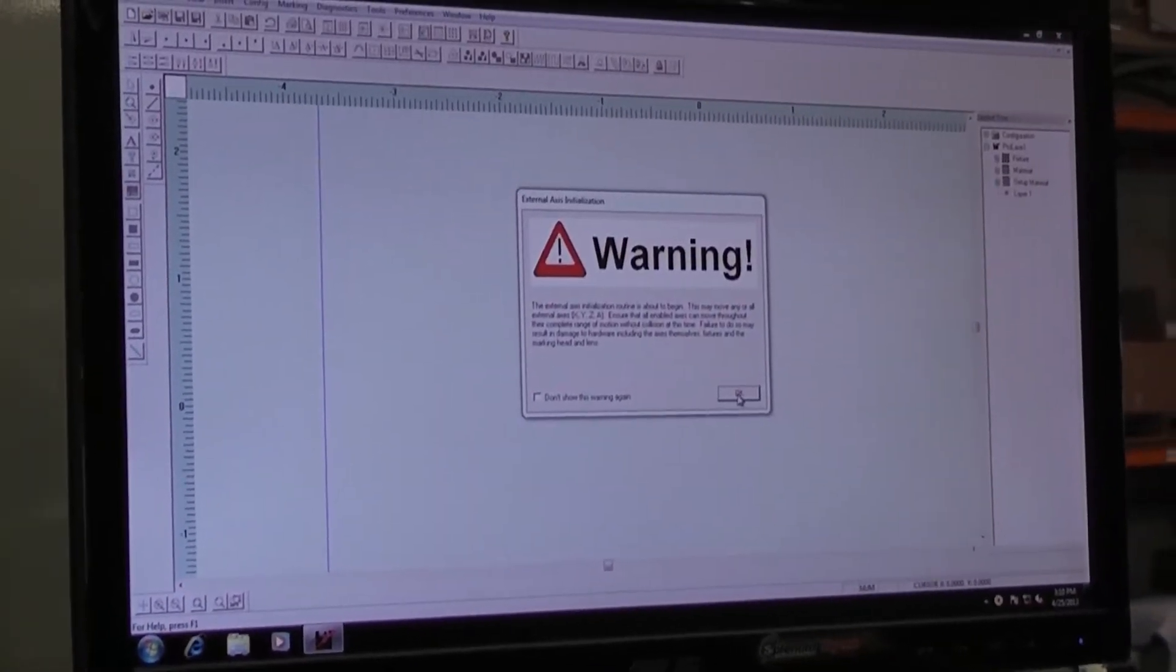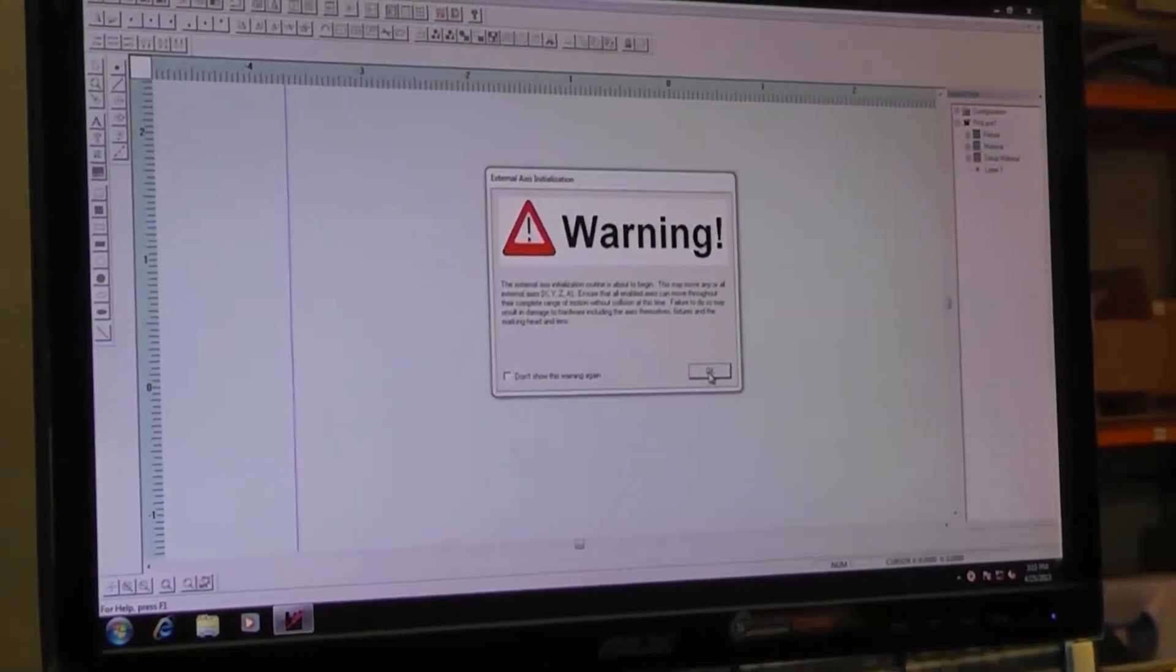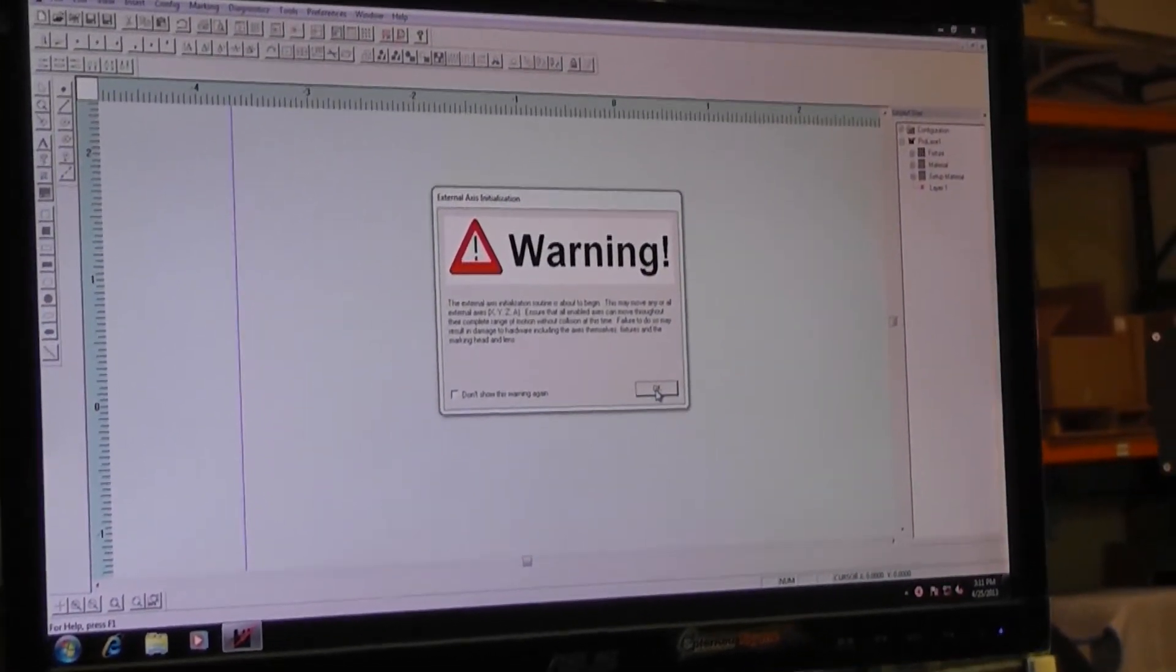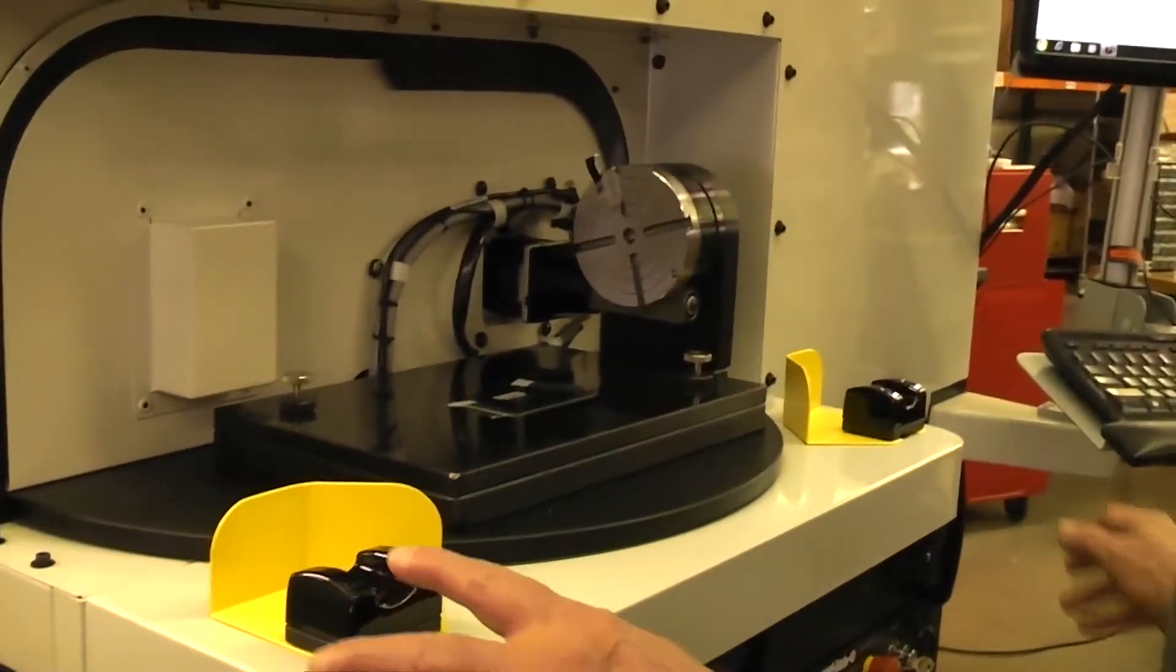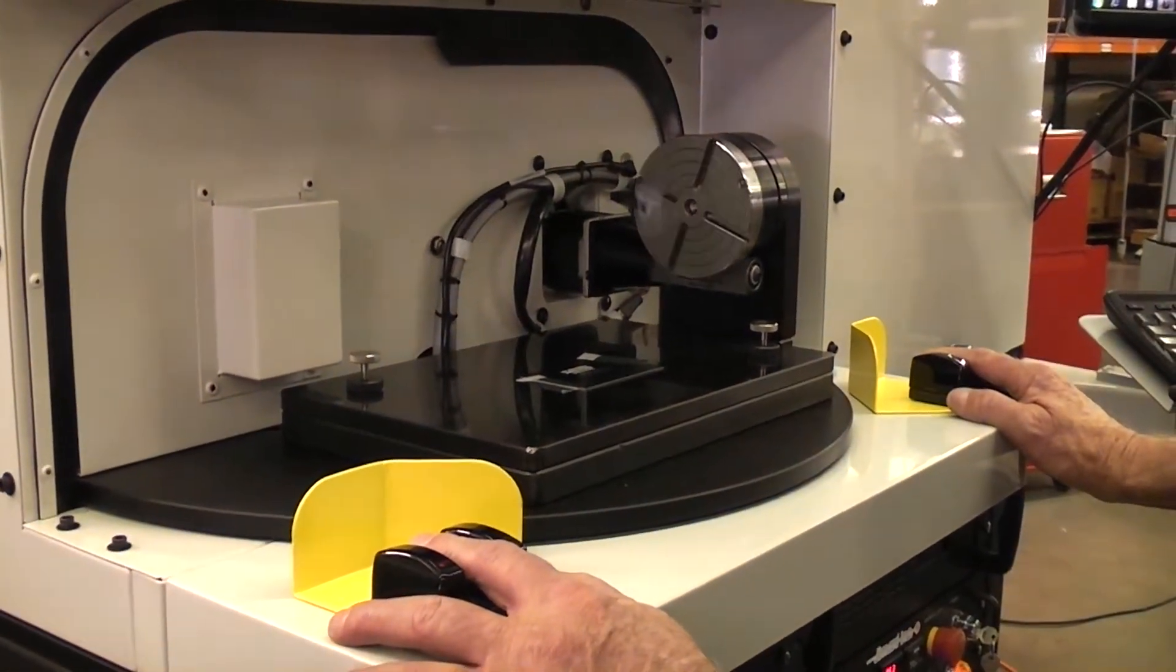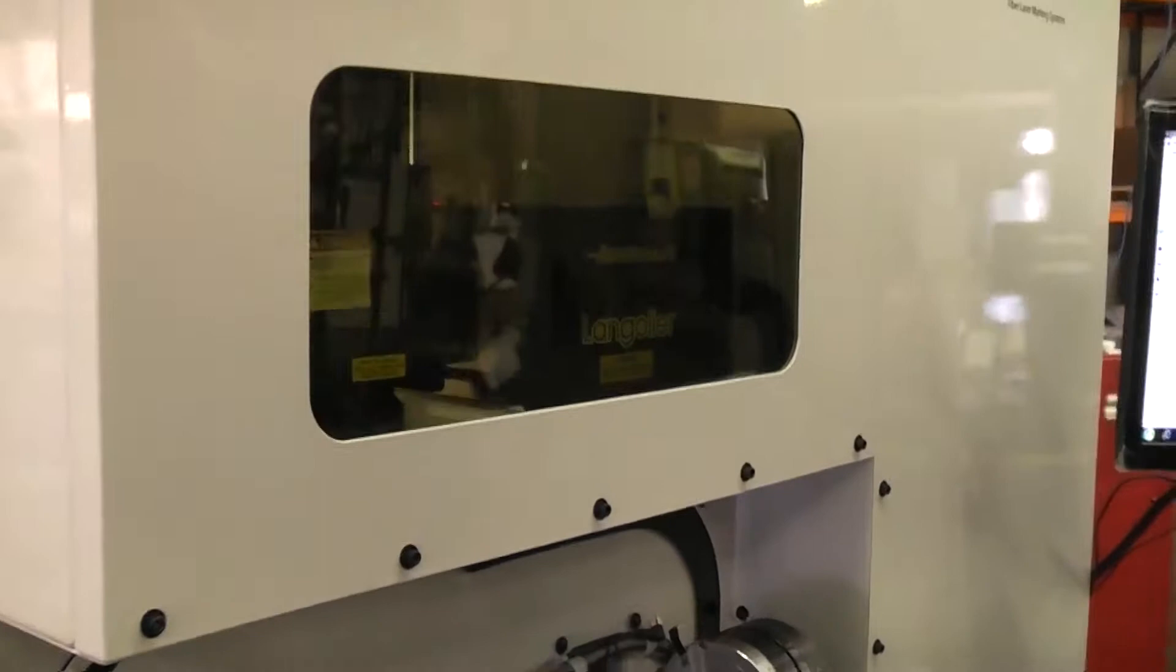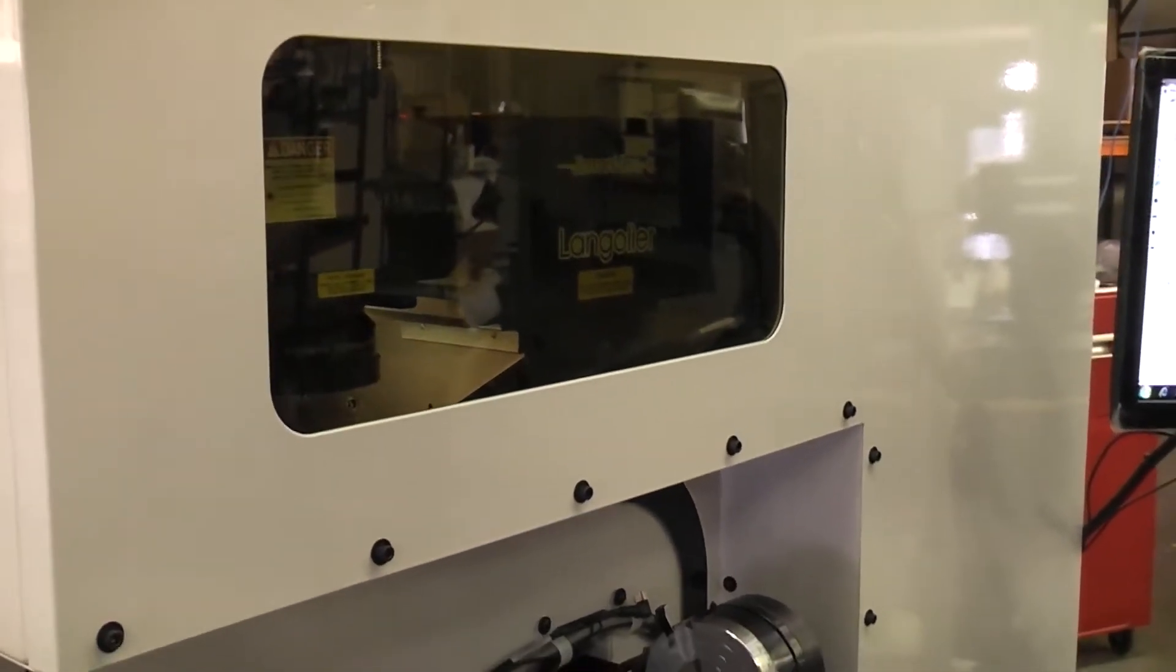In the initialization mode, the system is going to find the home position for each of the axes. No motion starts until fingers are placed into the finger switches, at which time each rotary axis, the Z axis, and the table axis all find their home positions.